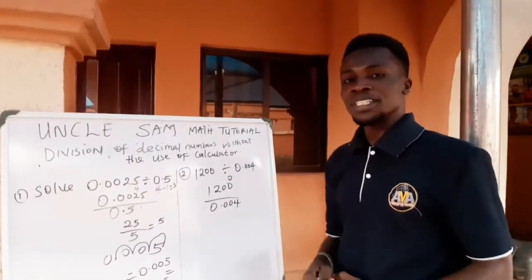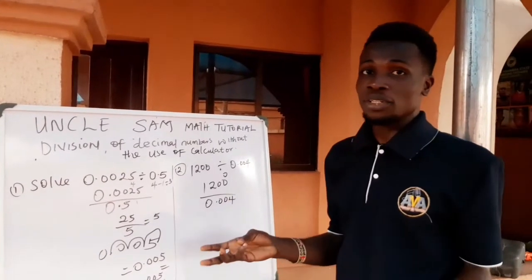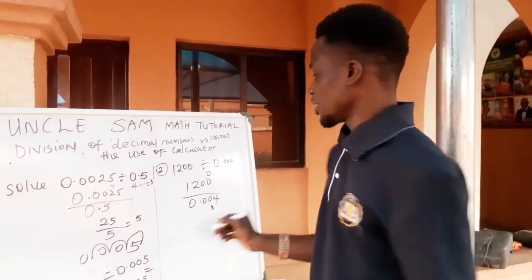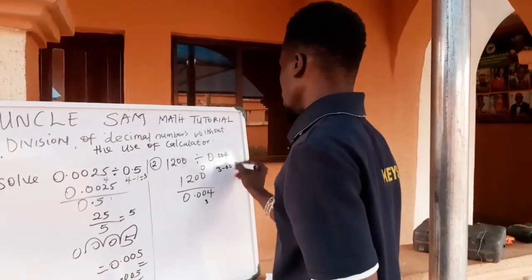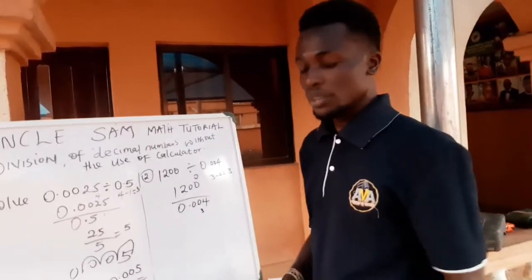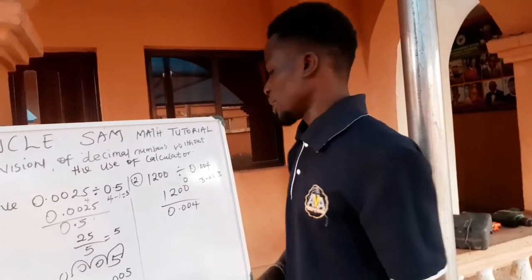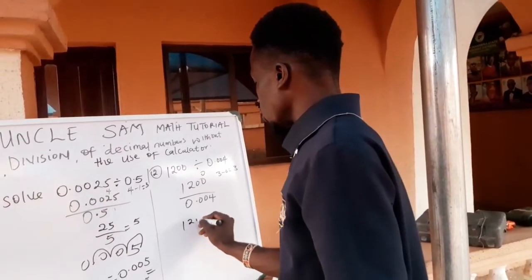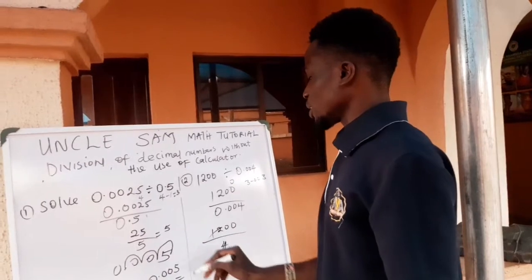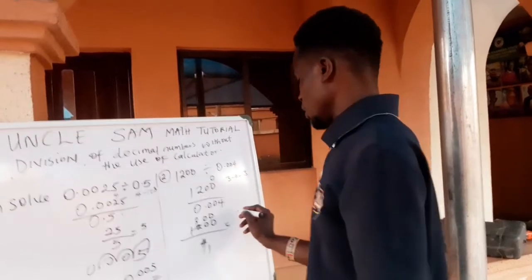For the denominator, how many numbers after the point can I see? 1, 2, 3 — that is 3 decimal places. So the denominator has 3 decimal places. As usual, we subtract: 3 minus 0 gives us 3. Keep that aside, then remove the point from the denominator — we're just left with 4. So 1,200 divided by 0.0004 is the same as 1,200 divided by 4, which gives us 300.